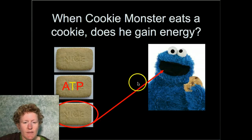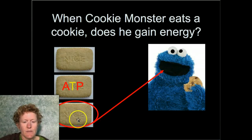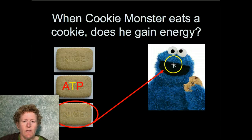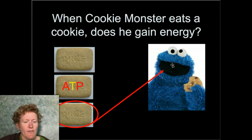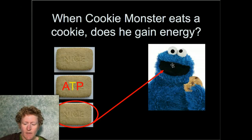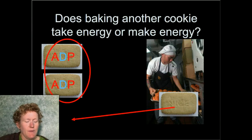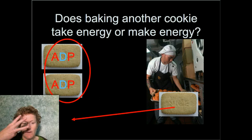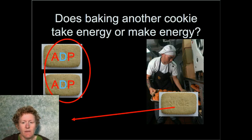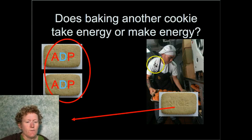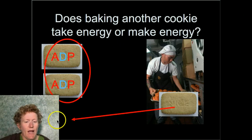ATP has three phosphate groups. When you break one off, you get energy — like when you eat a cookie, Cookie Monster breaks off that last phosphate group and gets energy. If you want to make ADP back into ATP — adenosine triphosphate, tri like a tricycle with three wheels — you have to put in a lot of energy. Baking cookies takes a lot of work, just like putting a phosphate group back on.